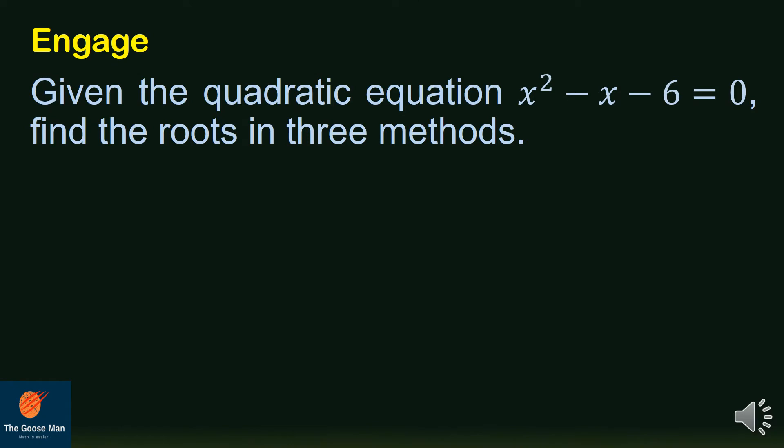To recall what we have discussed in the previous lessons, let us try this example. Given the quadratic equation x squared minus x minus 6 is equal to 0, find the roots using three methods.